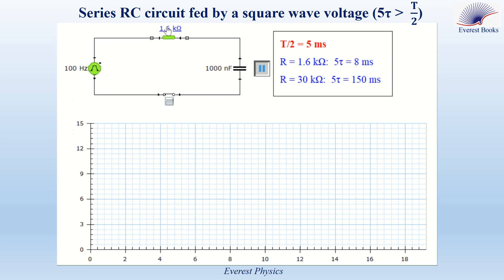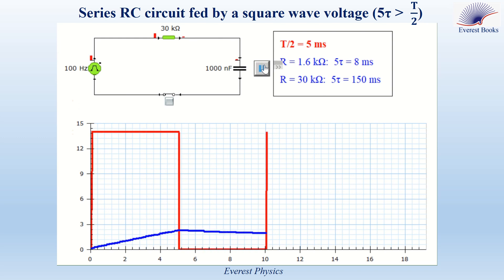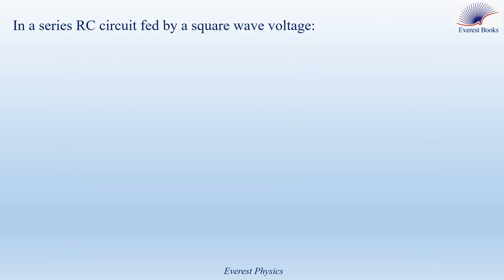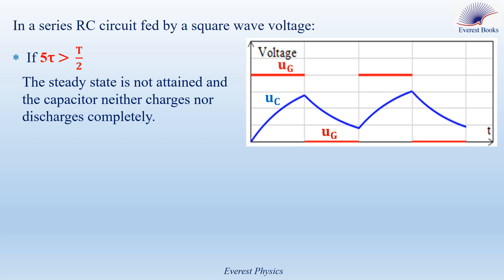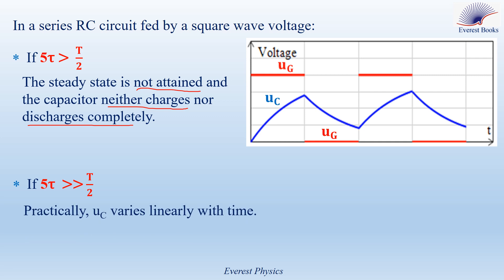In the second case, adjusting the resistance to 30 kΩ gives 5 tau equals 5RC equals 150 ms, which is much greater than T/2. Observing the curves, UC can be considered as a straight line during charging and discharging — it varies very linearly with time. We conclude that in a series RC circuit fed by a square wave voltage: when 5 tau is greater than T/2, the steady state is not attained and the capacitor neither charges nor discharges completely; and when 5 tau is much greater than T/2, UC varies practically linearly with time.